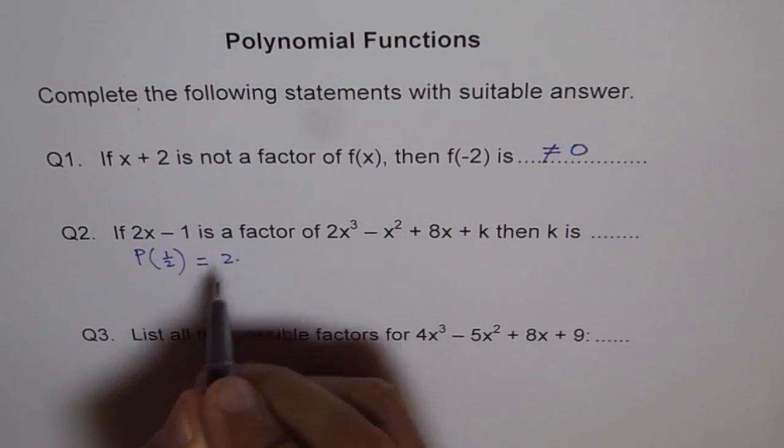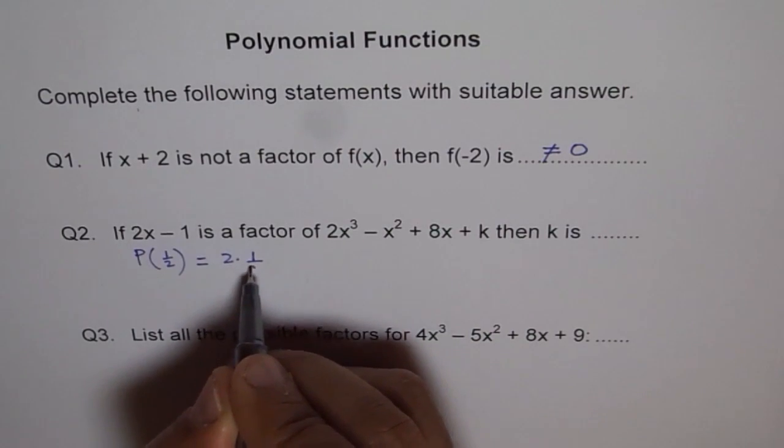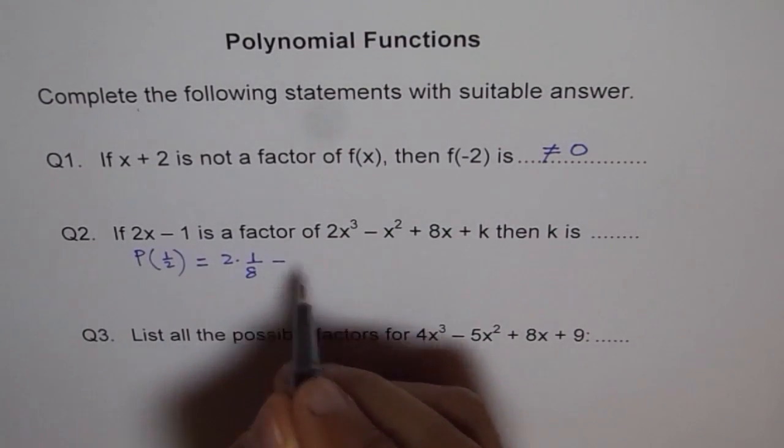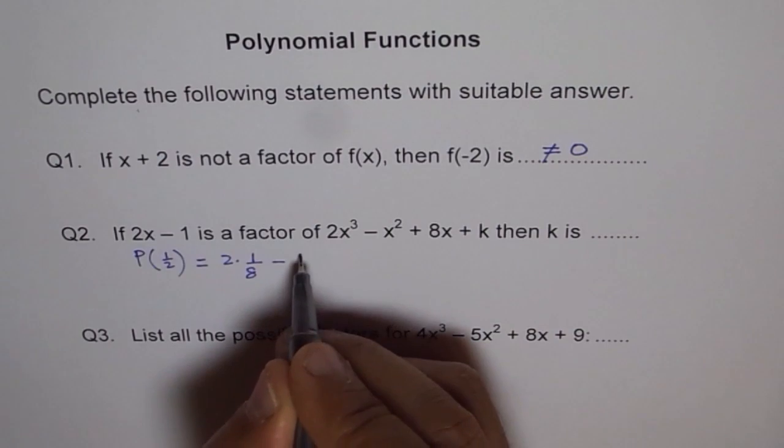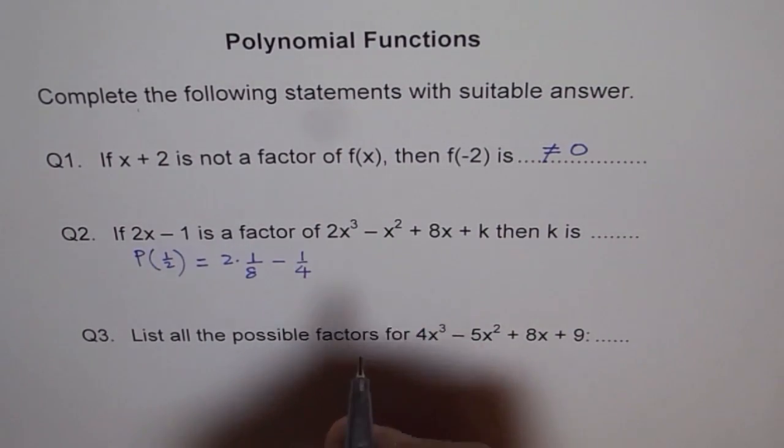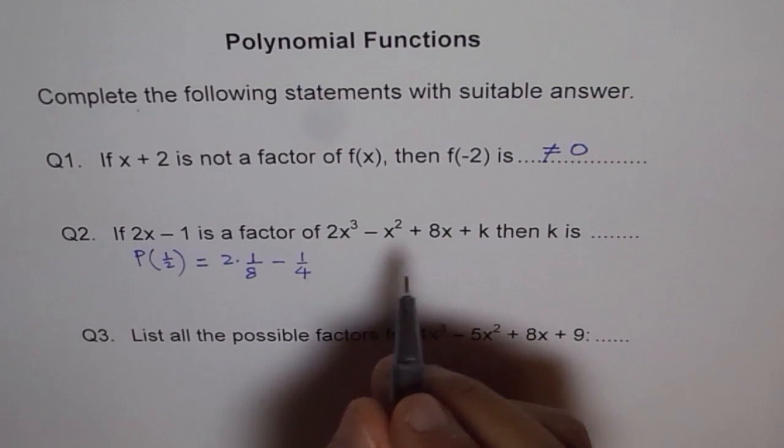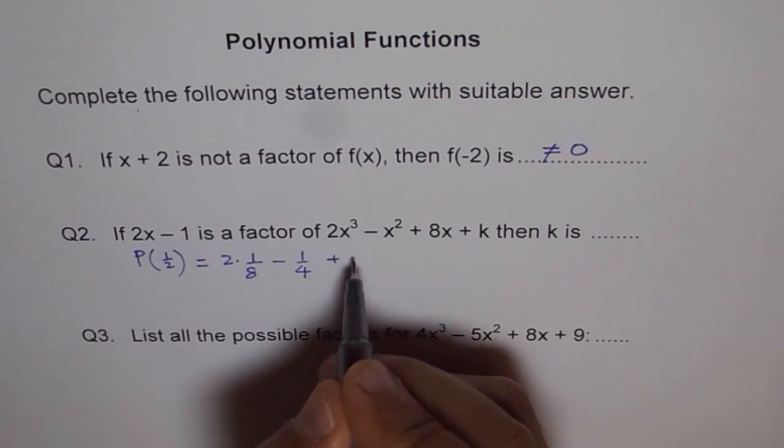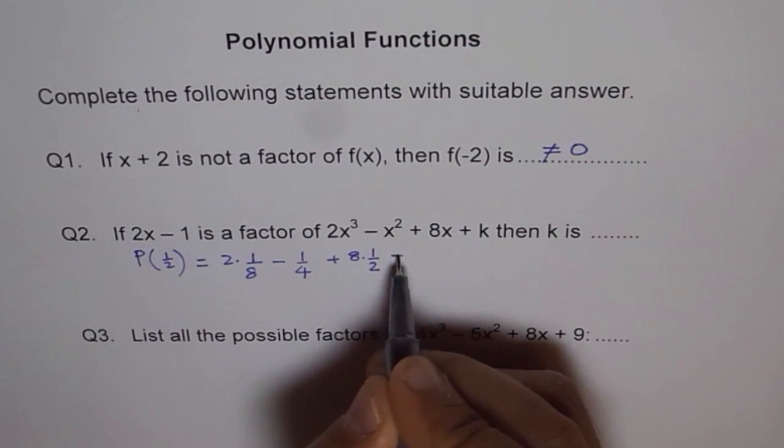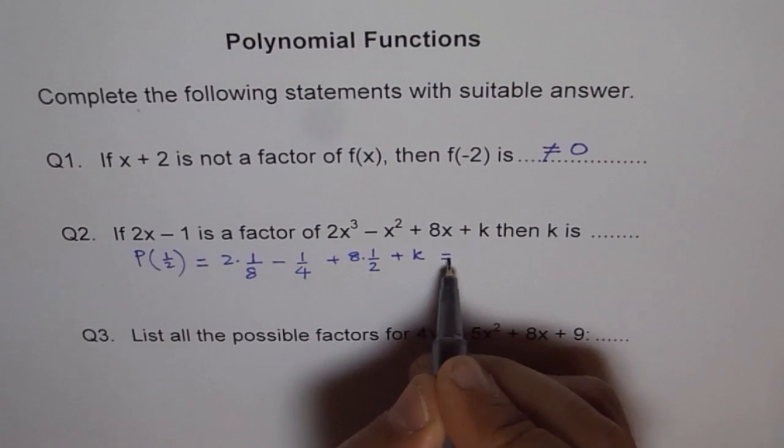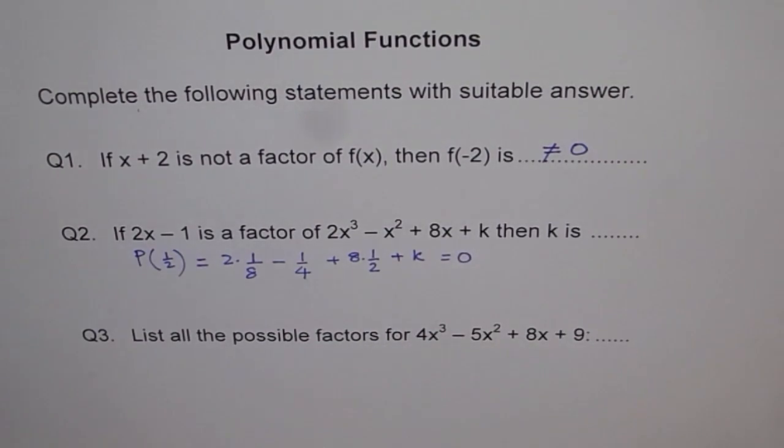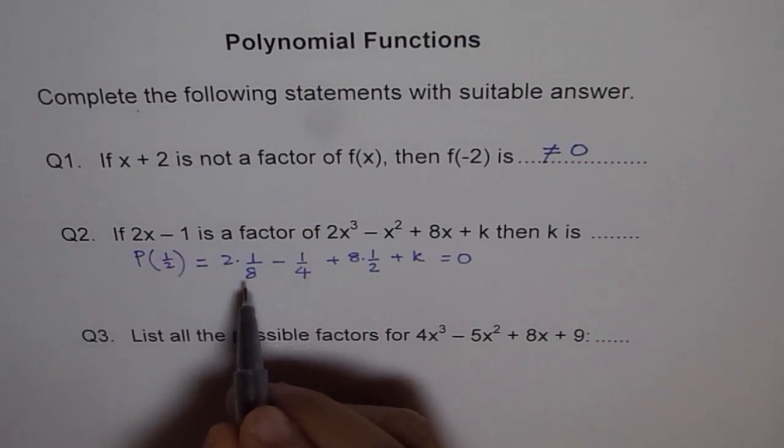2 times (1/2)³ - (1/2)² + 8 times 1/2 + k. This should be equal to 0. This equation helps us to find the value of k. Don't get afraid of fractions. Just see how simple it is.